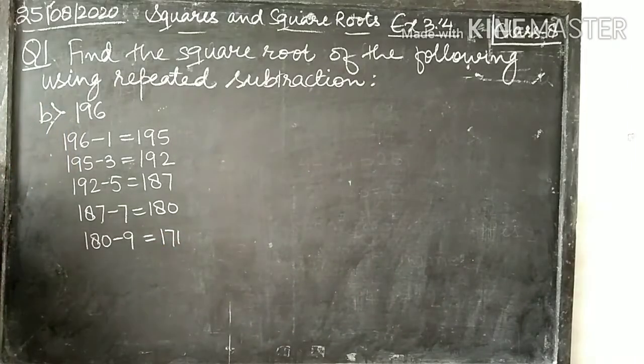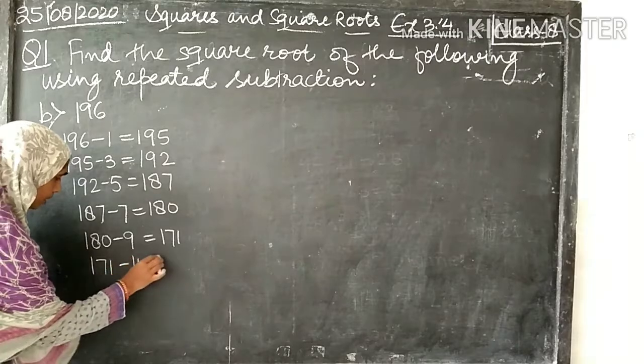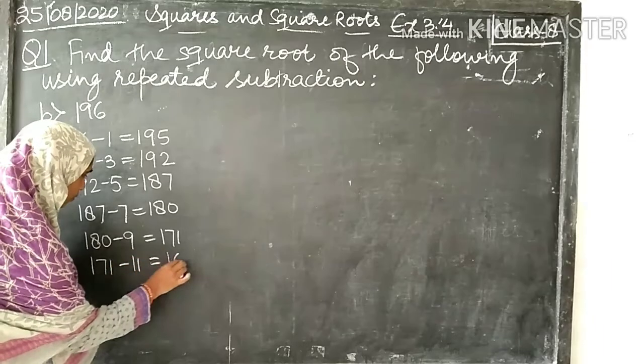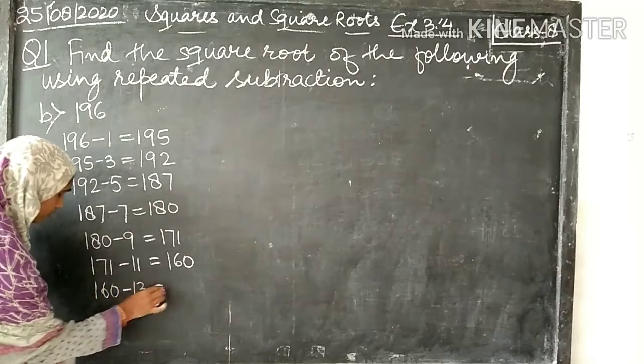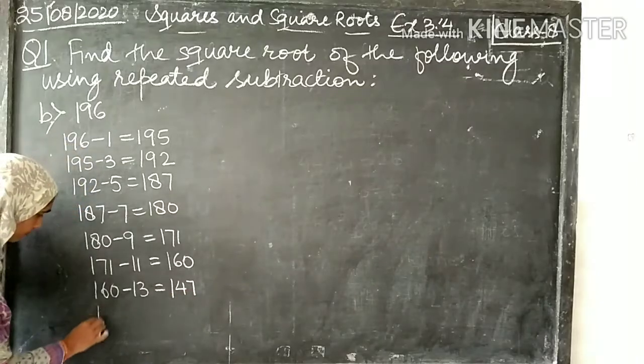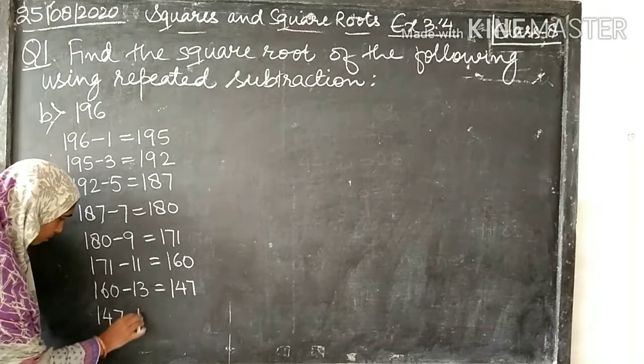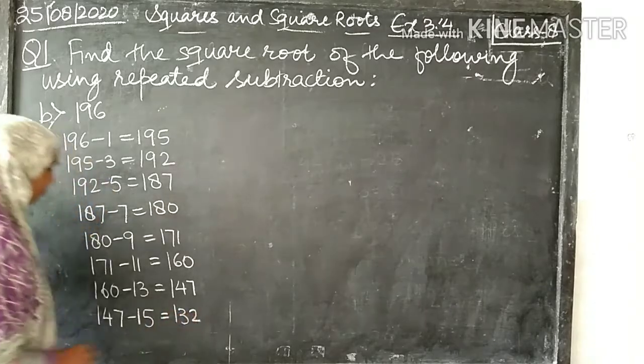171, minus 11 equals 160, minus 13 equals 147, minus 15 equals 132.